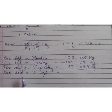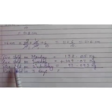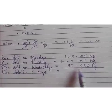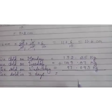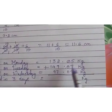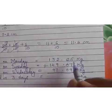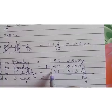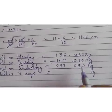So children, I have written the statement: rice sold on Monday, rice sold on Tuesday, and rice sold on Wednesday. When you add all this, you get the rice sold in 3 days. Now here we have 2 digits, 2 and 3. So to make it a like decimal, just add zeros.